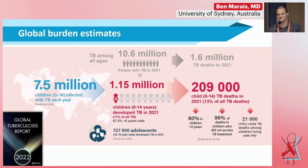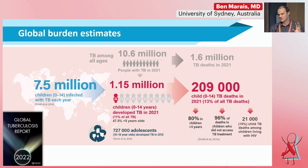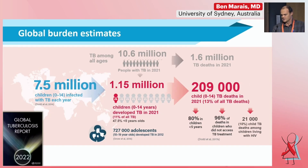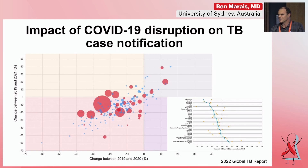Tuberculosis is the number one infectious disease killer on the planet, and also the number one cause of death in people with HIV, causing around 1.6 million deaths every year. In children, around a tenth of the global burden occurs in children under 15 years of age, with an estimated 200,000 deaths happening mostly in children under five. Most children who die from TB never accessed care or treatment.